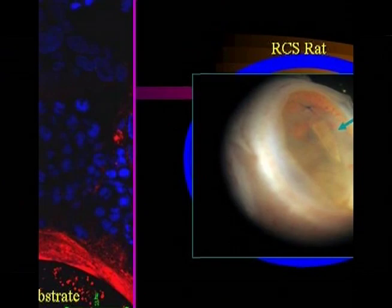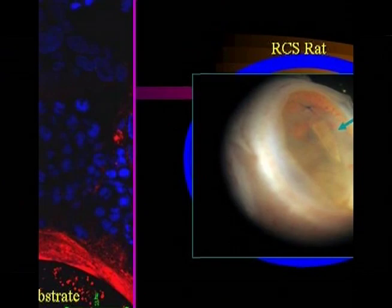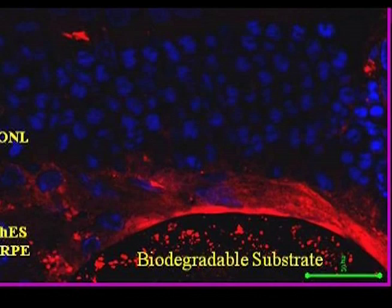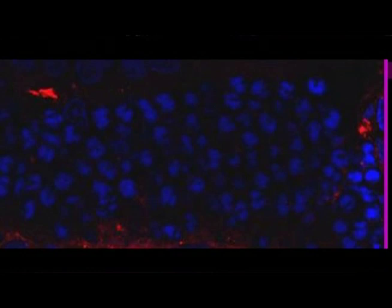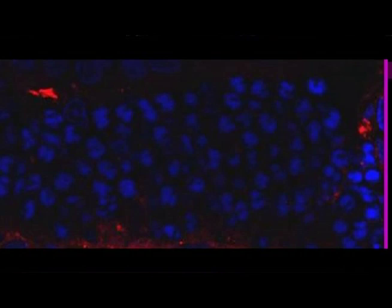Here's the eye with the little implant in this inherited Royal College of Surgeon's Rat. Here are the human-derived endothelial cells on a biodegradable substrate that David Hinton was able to differentiate. You can see the number of nuclei — these are the nuclei of the photoreceptors that have been preserved, versus if you don't put the human endothelial cell-derived RPE in this model, which has a genetic defect of the RPE. Collaborators' work similarly shows that a substrate with derived RPEs preserves the outer nuclear layer photoreceptors much greater than substrate alone without cells.